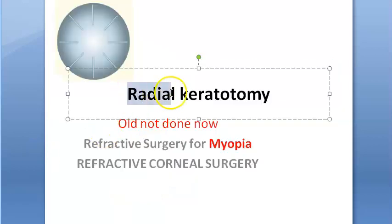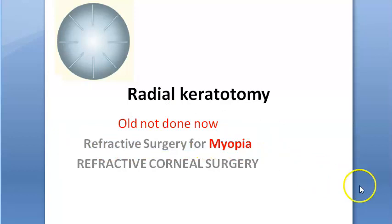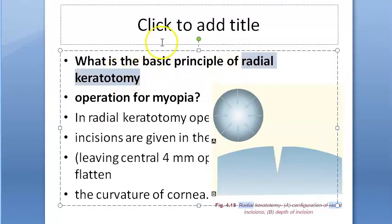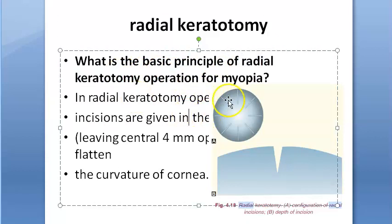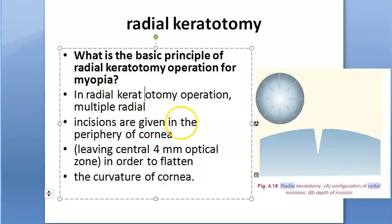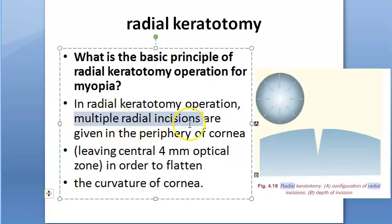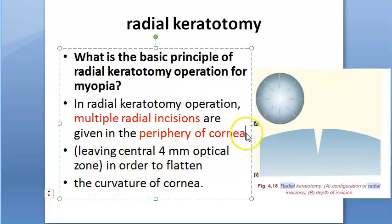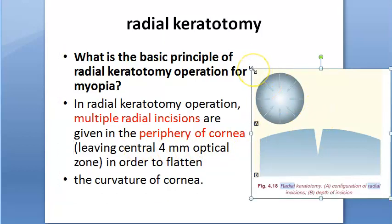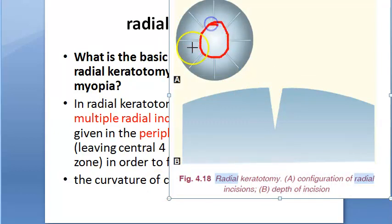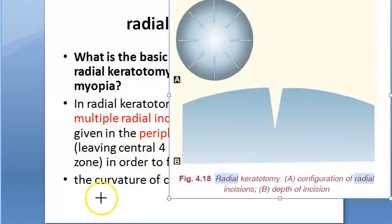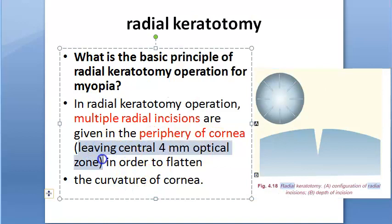Previously they had a surgery called radial keratotomy - a refractive surgery for myopia. In radial keratotomy, multiple radial incisions are given in the periphery of the cornea, leaving a central 4 millimeter optical zone untouched. So the middle is not touched; multiple radial incisions are given only in the peripheral cornea.